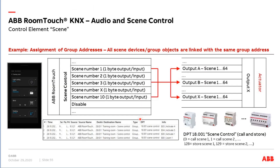For linking group addresses for scenes, it's not really difficult — we need only one group address, because with one group address we can call up to 64 different scenes. We get the objects: scene number one, two, three, up to ten. We create one group address and link it to all our scenes, then send it to the actuators — switch actuator, dim actuator, DALI gateway, etc. We link the group address to the scene objects like Output A, Output B, Output D, and so on. Only one single group address is needed.